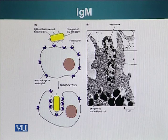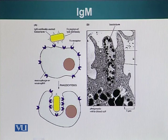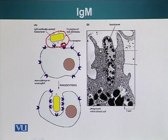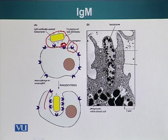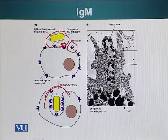Here we can see a photograph of a phagocytic cell endocytosing a pathogen. The pathogen has been decorated by IgG antibodies; the FC region is at the very tip. These antibodies bind special FC receptors on phagocytic cells, which activates receptor-mediated endocytosis — the membrane engulfs the pathogen and encloses it in a vesicle, which then fuses with a lysosome to cause the destruction of the pathogen.